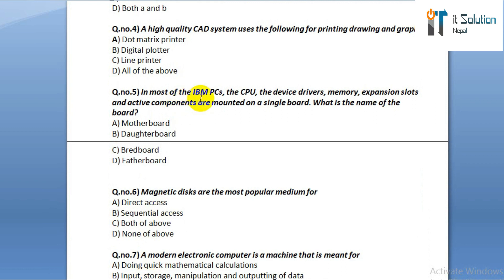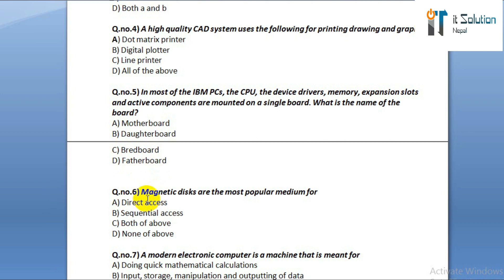Question number five: in most IBM PCs, the CPU, device driver, memory expansion slot, and active components are mounted on a single board. What is the name of the board? Option A: mother board. Option B: daughter board. Option C: breadboard. Option D: father board.